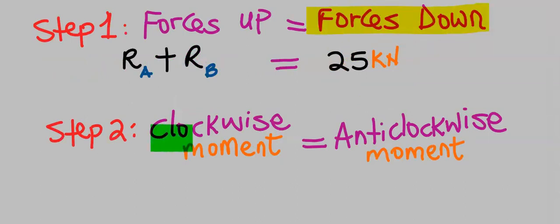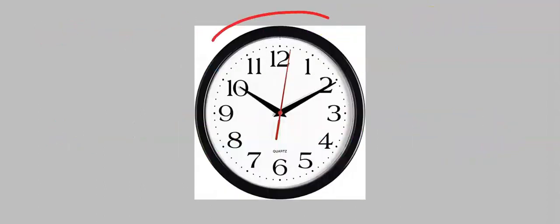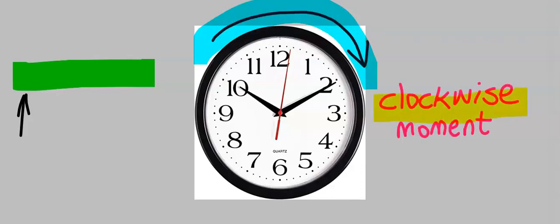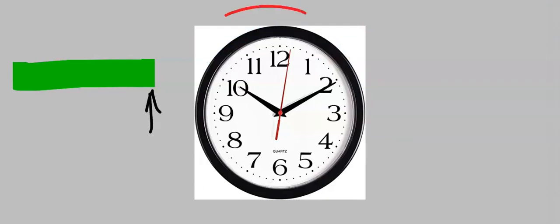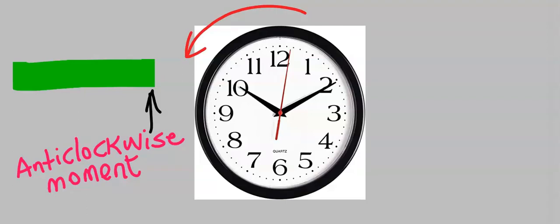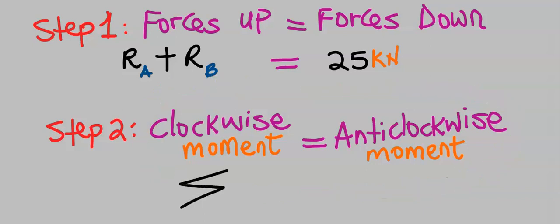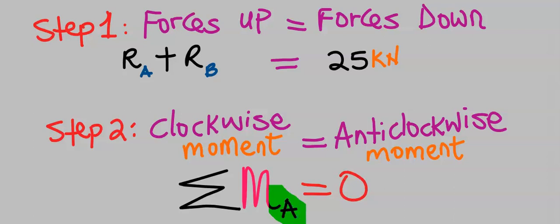Next, step number two: clockwise moment is equal to anti-clockwise moment. The force that will push this beam to turn in the clockwise direction is known as clockwise moment. Likewise, any force that will push this beam to turn in the opposite direction — against the clock direction — is known as anti-clockwise moment. Another way to write this is simply saying the summation of all the moments about a particular point is equal to zero; this point can be A or it can be B.